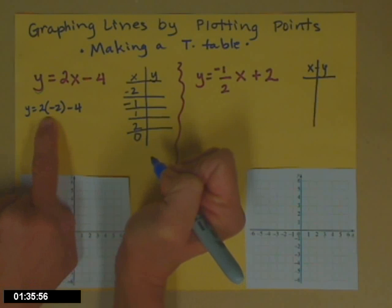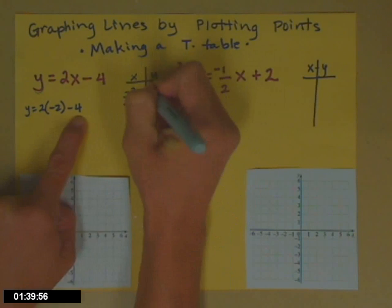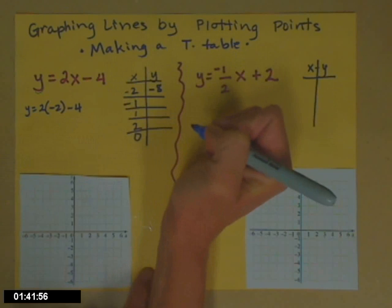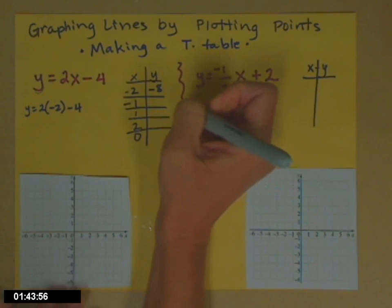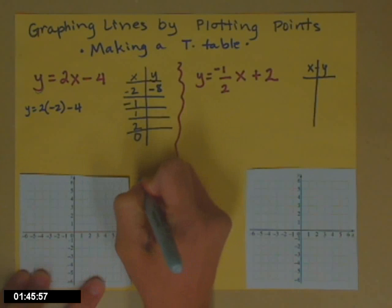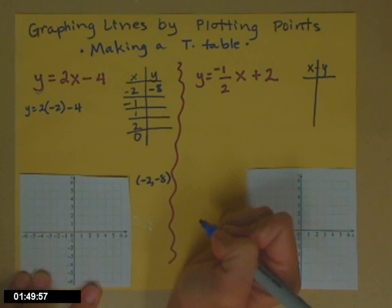So let's go ahead and do that math in our heads. 2 times negative 2 is negative 4, minus 4 more is negative 8. So this corresponds to the ordered pair, negative 2, negative 8, which we would then plot.